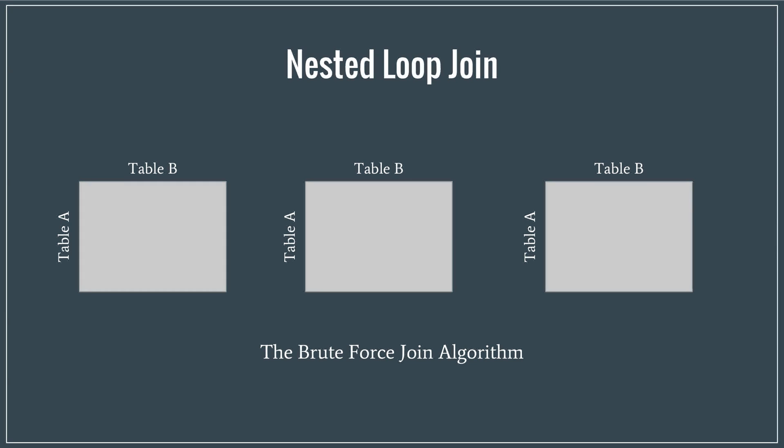Before we explain ripple join, first try to think about a brute force algorithm for joins. Yes, you guessed it right. We can do this with a simple nested loop. For a specific entry in table A, look for a match in table B by basically nesting two for loops. However,